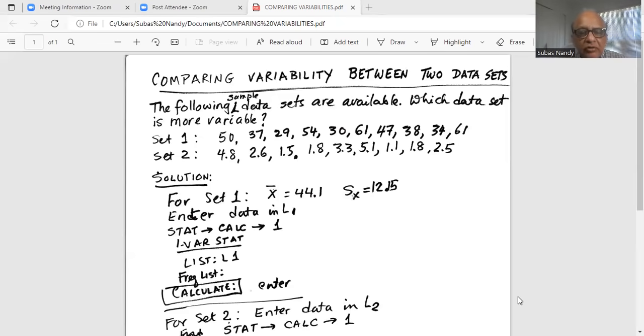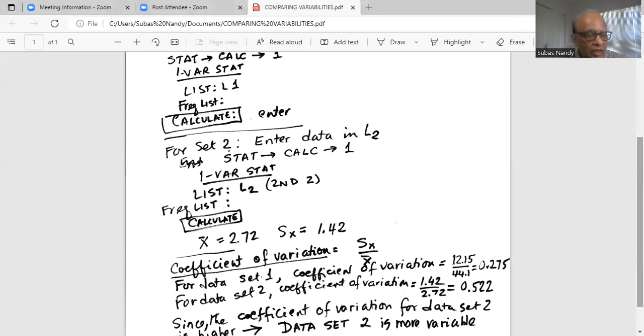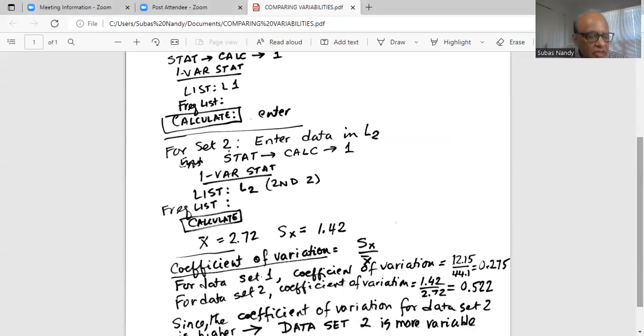Okay. The mean is 2.72 and the standard deviation is 1.42, sample standard deviation 1.42.